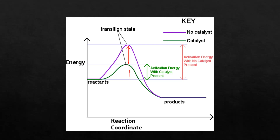What catalysts do is lower the activation energy. For the purple graph, without the catalyst, a large amount of activation energy is required. But when you add a catalyst, this activation energy is lowered and less energy is required for the reaction to take place. This is how catalysts work and how they speed up a reaction.